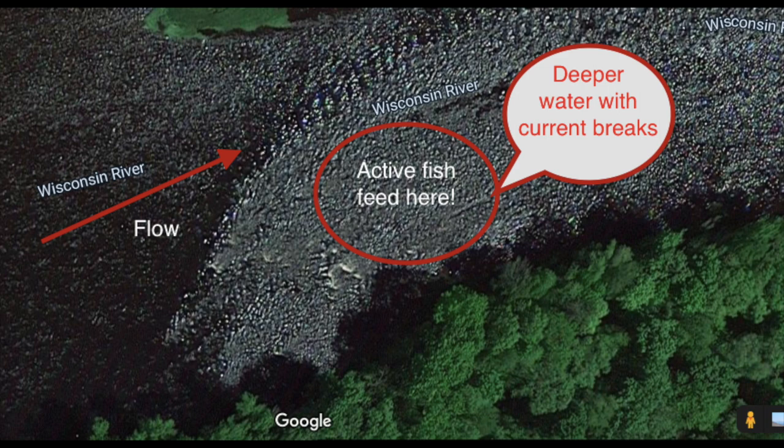Immediately downstream from the riffle there is typically deeper water with back eddies and current breaks that attract bait fish and active muskies that will move into these areas and be advantageous feeders — the most active fish in the rivers. When you're pressed for time, I would highly recommend fishing these higher activity areas of the rivers in order to maximize your river production.